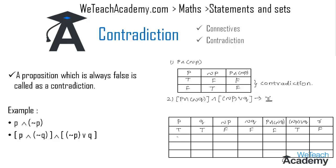If p is true and q is false, then not p would be false and not q would be true. Hence p and not q would be true and not p or q would be false. By using the definition of conjunction, we get the truth value in the last column as false.